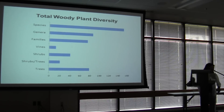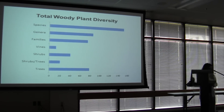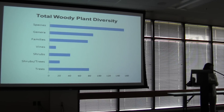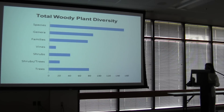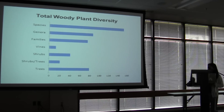There are 154 total woody plant species represented by 76 families and 87 genera. Of those, 79 were trees, 41 were shrubs, 13 were vines or climbers, and 21 were vines or trees. It should be noted that this is only woody plants, not herbs and grasses.